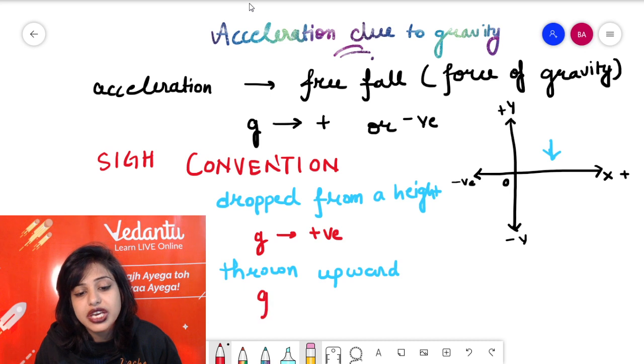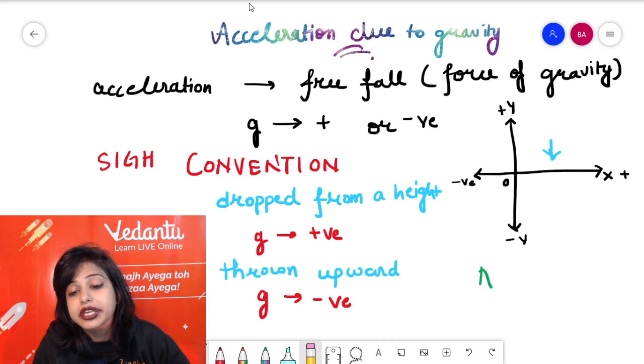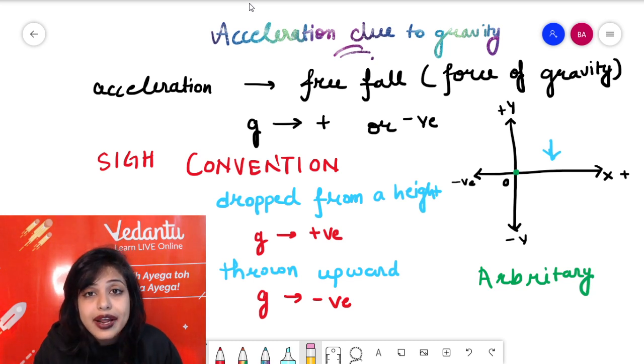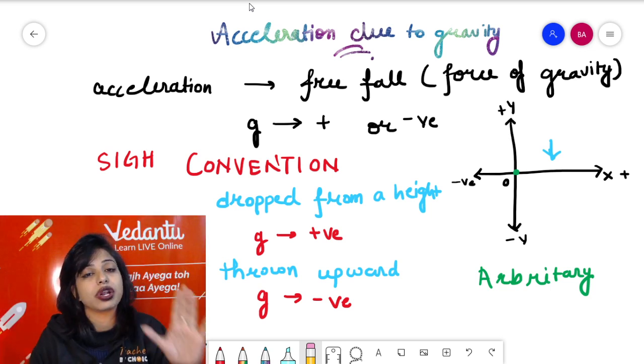That means g should be taken as negative. But all these signs are arbitrary - it depends on where I choose to put my Cartesian coordinate. The magical thing is there will be no change in the answer.